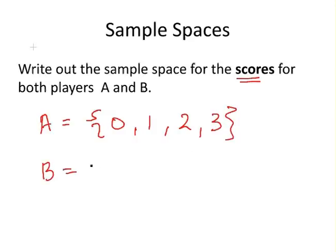For B, we would have zero, one, two, three, or four heads. This example is different from the urn example because we're interested in the scores, not the actual combination of heads and tails.